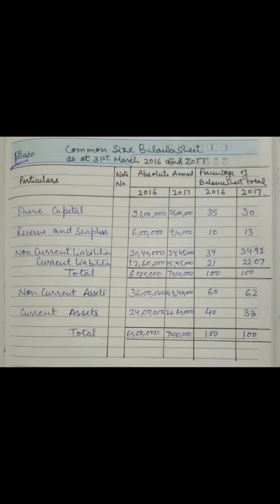As you can see, I have already prepared the common size balance sheet. The first column comprises of particulars, then the note number, then a column for absolute amount — which contains two sub-columns for the two years — and after that there's a column for percentage of balance sheet total for the two years 2016 and 2017.